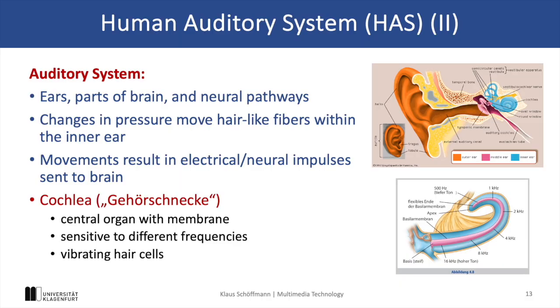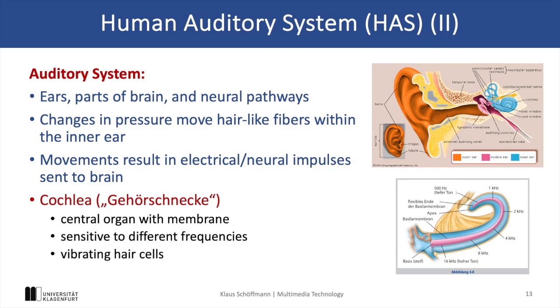The auditory system itself consists of the ears, specific parts of the brain, and complex neural pathways. When sound waves arrive at the inner ear, they create pressure changes that move tiny hair-like fibers inside the cochlea, which is our primary organ for detecting sound. These movements generate electrical impulses that travel to the brain, and this is how we perceive sound. The cochlea is especially sensitive to different frequencies, with specific regions corresponding to low, medium, and high pitches, allowing us to perceive a wide range of sounds.